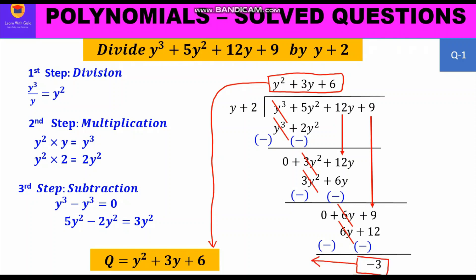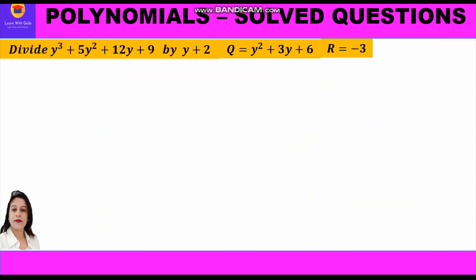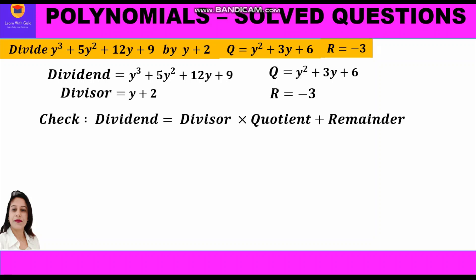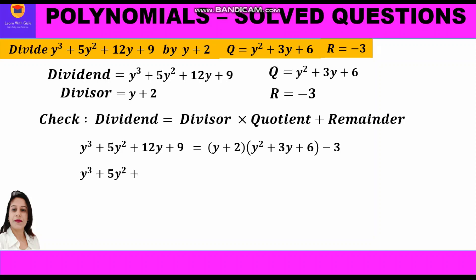Now let us check the answer using the division algorithm, which requires four elements: dividend, divisor, quotient, and remainder. The algorithm states: dividend = divisor × quotient + remainder. Substituting: y³ + 5y² + 12y + 9 = (y + 2)(y² + 3y + 6) + (−3).